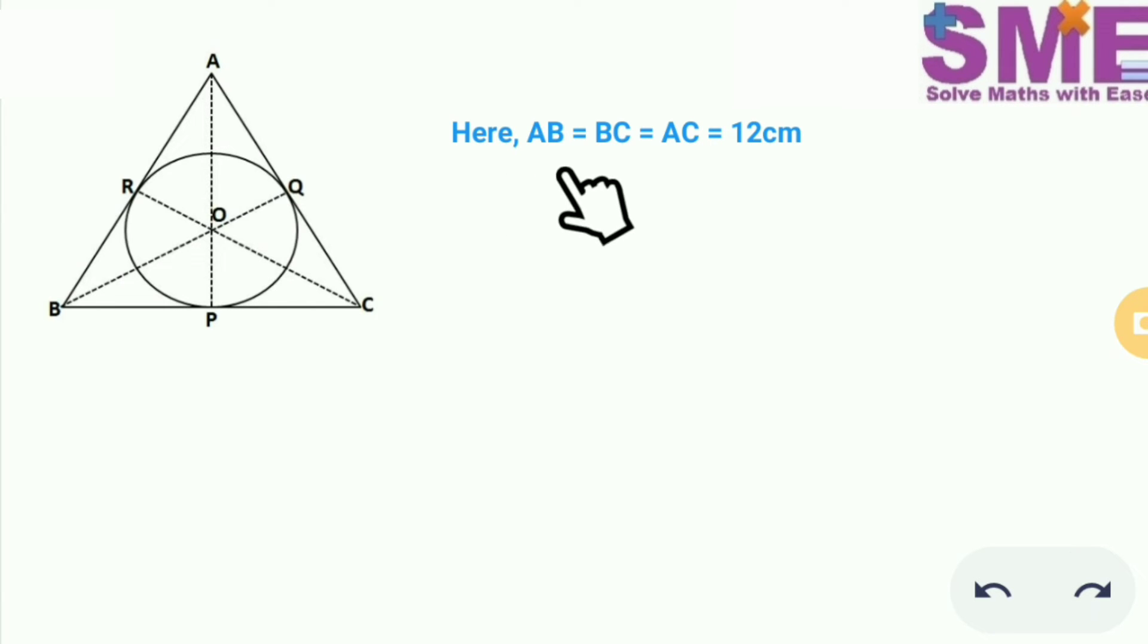It is given that AB is equal to BC is equal to AC is equal to 12 cm. We have O as the incenter and OP is equal to OQ is equal to OR which is the radius of the circle.